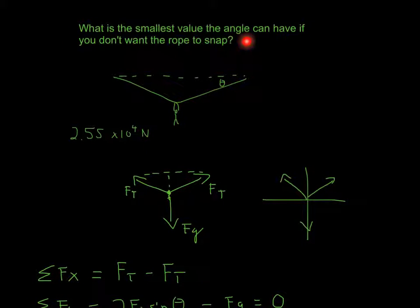So in this problem, they have: what is the smallest value the angle can have if you don't want the rope to snap? So you have the angle, and this is the force. This is the tension force that will cause the rope to break.